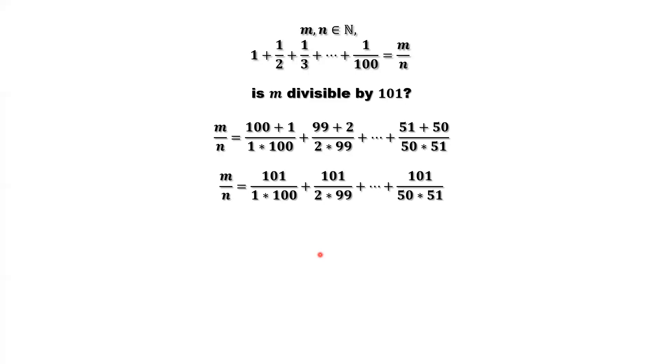Continue to simplify. You can find each numerator of the right-hand side is 101.